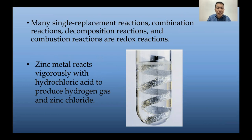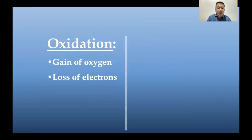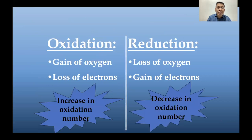Another example: zinc metal reacts vigorously with hydrochloric acid to produce hydrogen gas and zinc chloride. We can write that as Zn + HCl producing ZnCl2 + H2 — of course you have to balance it. Examples of reactions that are NOT redox include double replacement reactions and acid-base reactions.